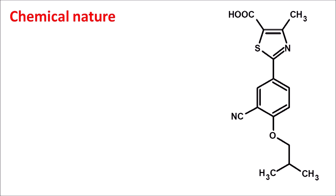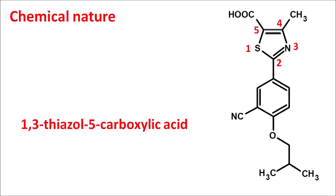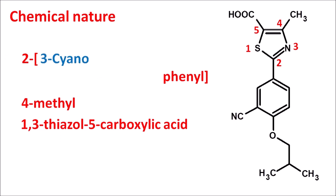Now let us look at the chemical nature of this drug. The structure of febuxostat shows it has no structural relation to uric acid — it has neither a purine nor a pyrimidine nucleus, but instead a different heterocyclic ring system. Giving the numbering: positions 1–5 form a 1,3-thiazole with a carboxylic acid at the fifth position — written as 1,3-thiazole-5-carboxylic acid. There is a methyl group at position 4, and at position 2 there is a phenyl ring bearing a cyano group at the third position and a 2-methylpropoxy side chain at the fourth position.